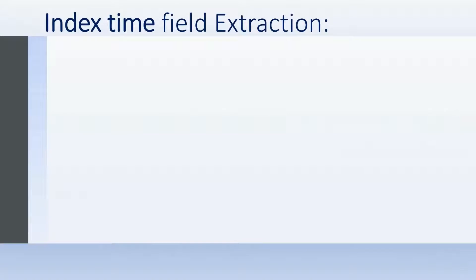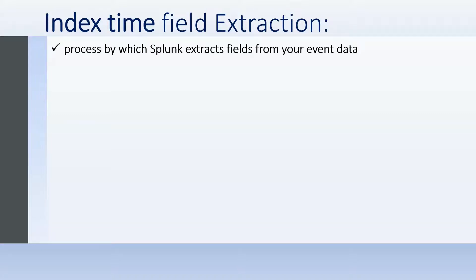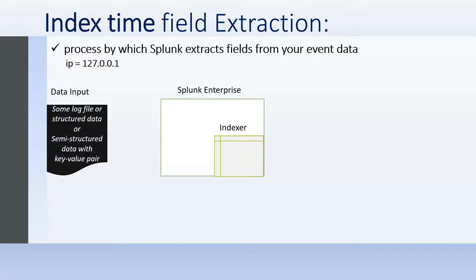Let's begin with index time. As the name suggests, index time extraction is the extraction which takes place at index time. Index time is the process where Splunk extracts the fields from your input data. For example, if your input data contains a field called IP and its value, that kind of field extraction happens at the index time.